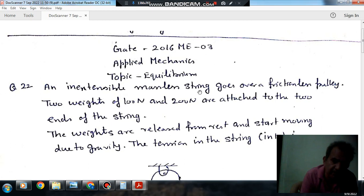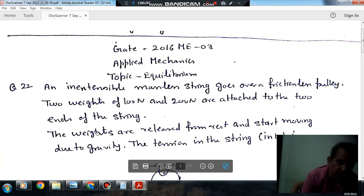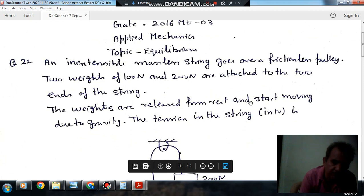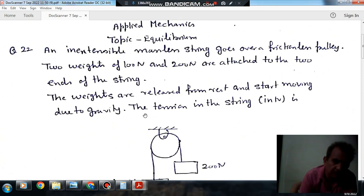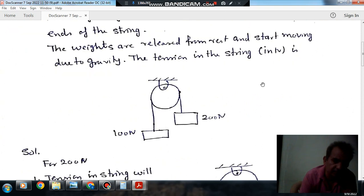An inextensible massless string goes over a frictionless pulley. Two weights of 100N and 200N are attached to the two ends of the string. The weights are released from rest and start moving due to gravity. The tension in the string in newton is: